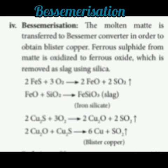The next step is the Bessemerization process. The molten matte is transferred to the Bessemer converter — a vessel in which the process takes place — in order to obtain blister copper, which is 98% pure metal with 2% impurities. Ferrous sulfide (FeS) is oxidized to ferrous oxide (FeO), which reacts with silica to form FeSiO₃ slag. Cu₂S is then oxidized to form cuprous oxide (Cu₂O) and SO₂.